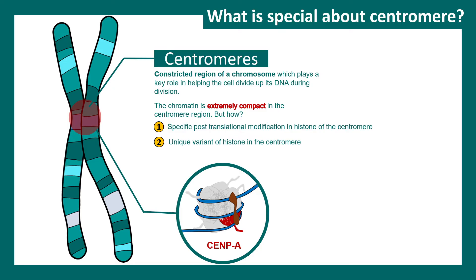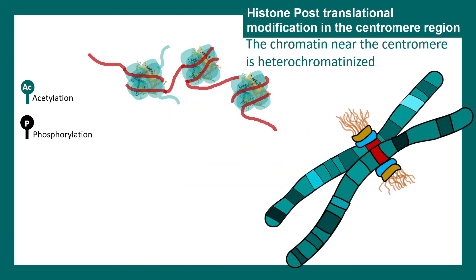There are unique histone variants present in the nucleosome of the centromere region. Specifically, CENP-A, which is an H3 variant, is present and abundant in the centromere region. Additionally, the centromere contains repetitive DNA sequences called alpha satellites. These three features — histone modifications, CENP-A, and alpha satellites — are the peculiar molecular features of the centromere region.